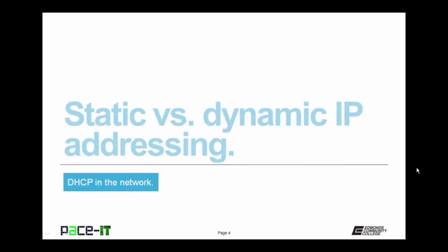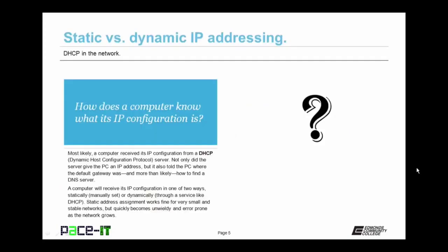We begin by talking about static versus dynamic IP addressing. How does a computer know what its IP configuration is? More than likely, a computer received its IP configuration from a Dynamic Host Configuration Protocol server. Not only did the server give the PC an IP address, but it also told the PC where the default gateway was, and more than likely how to find a DNS server. A computer will receive its IP configuration in one of two ways — either statically, which means manually set, or dynamically, which means through a service like DHCP.